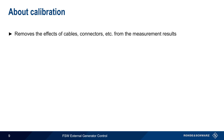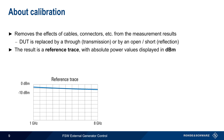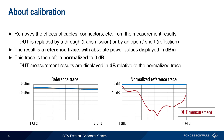Next we'll discuss calibration, which is the process by which the effects of cables, connectors, etc. are removed from the measurement results. Calibration involves replacing the DUT with a THRU in the case of transmission measurements, or with an OPEN and/or SHORT in the case of reflection measurements. The result of a calibration is a reference trace, which shows absolute measured power values in units of dBm. For network measurements, this trace is usually normalized to a 0 dB straight line, and measurements of the DUT are shown in units of dB relative to this normalized reference.